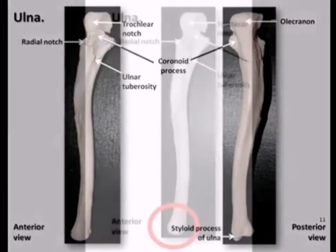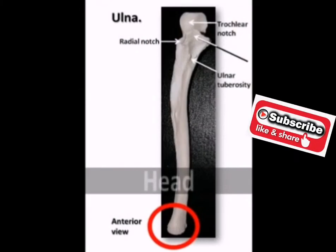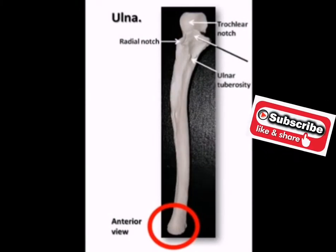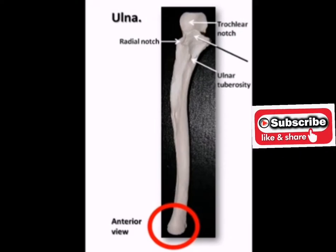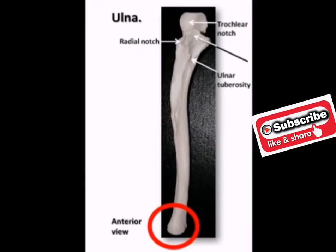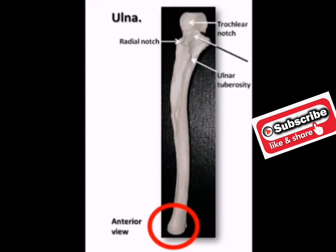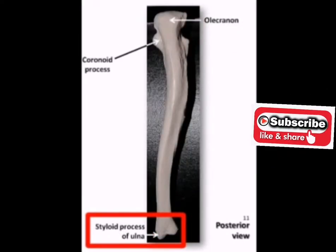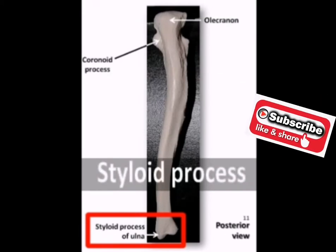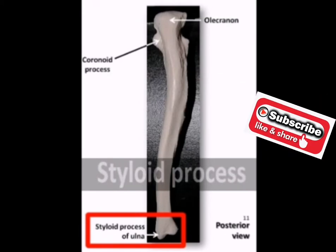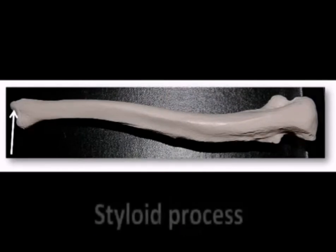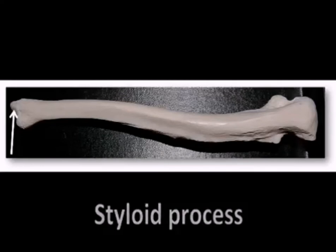The head of the ulna is located at its narrow distal end. It articulates with the carpals but is separated from those bones by a fibrocartilaginous disc. On the posterior side of the distal end is the styloid process — a small spine-like bony projection that serves as an attachment point for the ulnar collateral ligament, connecting it to the wrist.